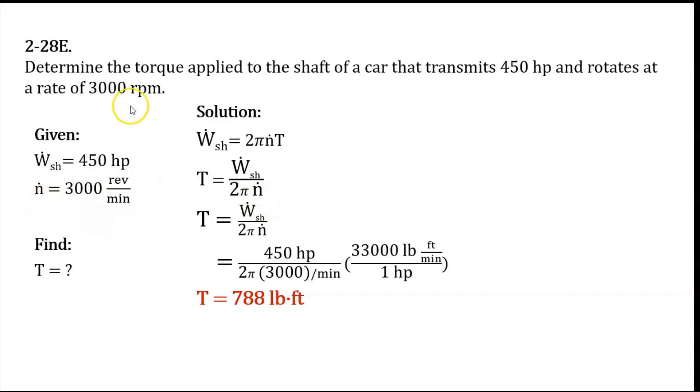Plugging the given values into this equation, we will have 450 horsepower all over 2 pi multiplied by 3000 revolutions per minute. We will express the torque in pound-feet.